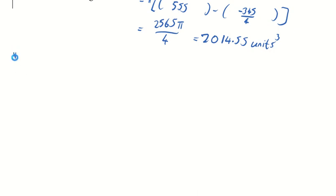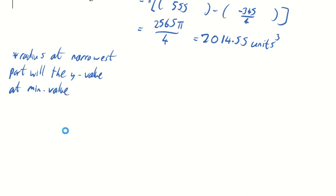radius at narrowest part will be the y value at the minimum value. OK, I hope you can read that.